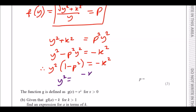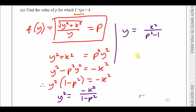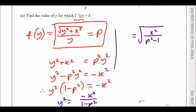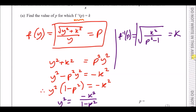Factorize y squared: y squared times (1 minus p squared) equals minus k squared. Divide by (1 minus p squared) to get y squared equals minus k squared over 1 minus p squared. Then square root to make y the subject. Flipping the position — writing p squared minus 1 — makes the numerator positive k squared, which is neater. So y equals the square root of k squared over (p squared minus 1).